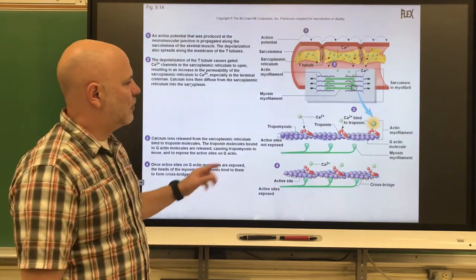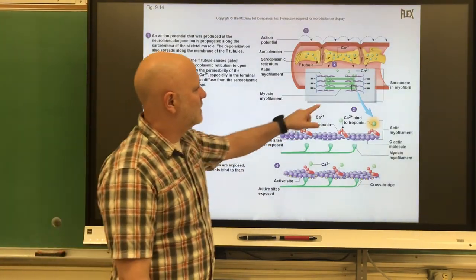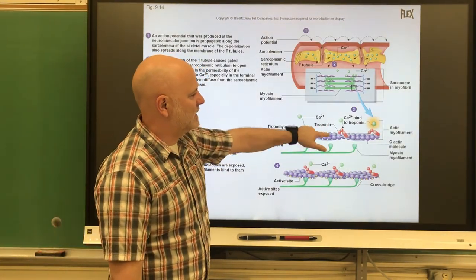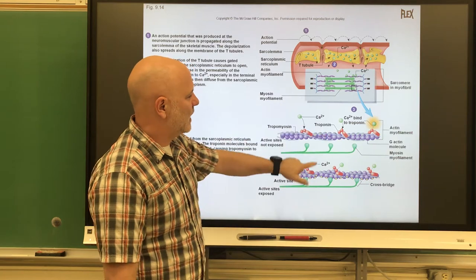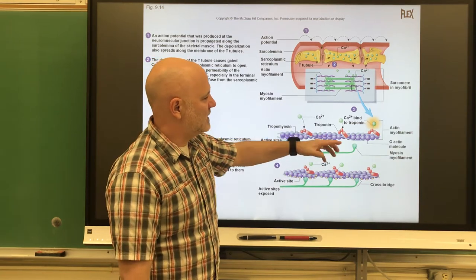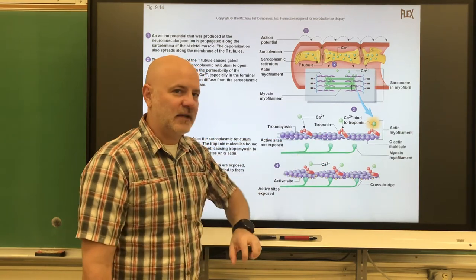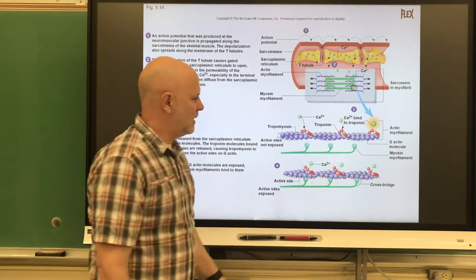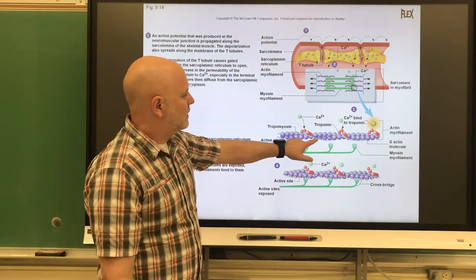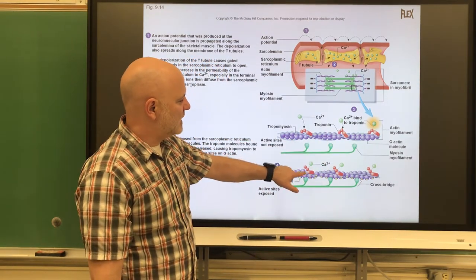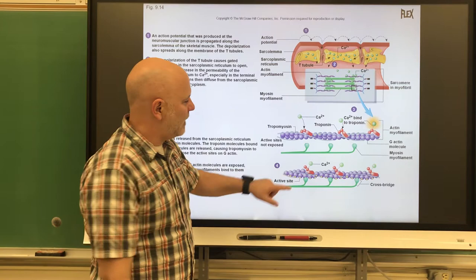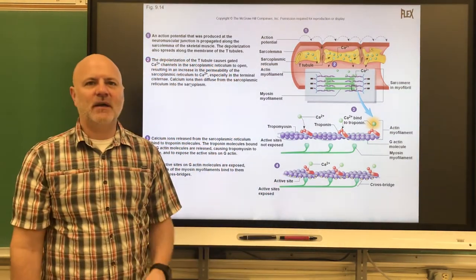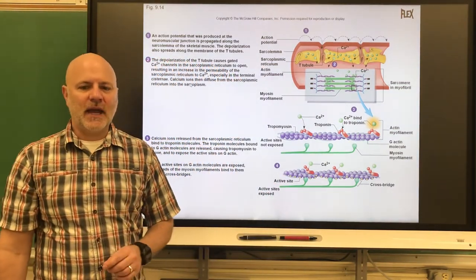Prior to calcium binding, the tropomyosin is blocking the active site on the actin. When calcium binds to troponin, the tropomyosin moves out of the way, and myosin can now bind to the active site on the actin.